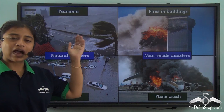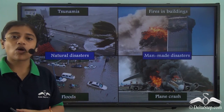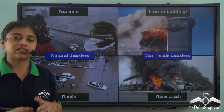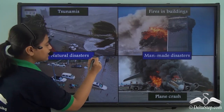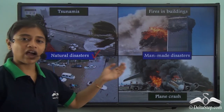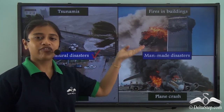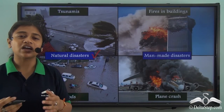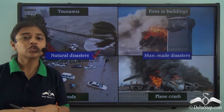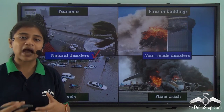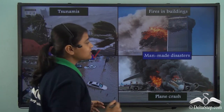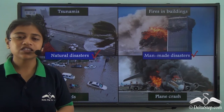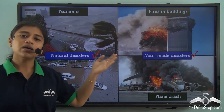Tsunamis and floods caused by geological and climatic factors are kept under the category of natural disasters. On the other hand, plane crashes, fires in buildings, nuclear terrorism and many other things caused due to human activities can be categorized as man-made disasters. So disaster could be natural or man-made.